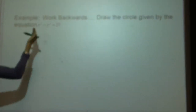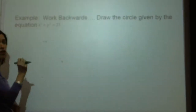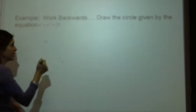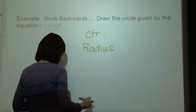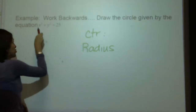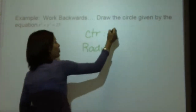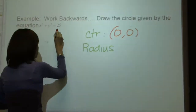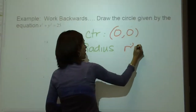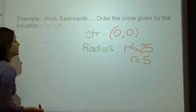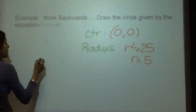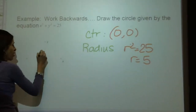I can ask you to work backwards and draw a circle given an equation. The first thing to be careful of is that the number on the right side is not your radius — that is r squared. So you always need your center to graph it and a radius. Looking at this equation with no h or k in there, I know that the center is the origin. To find my radius, r squared is 25, so r would be 5. We're only going to look at the positive square root.